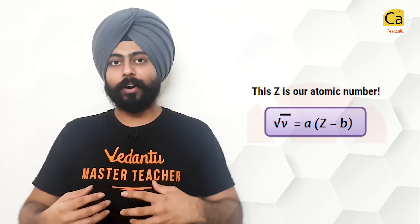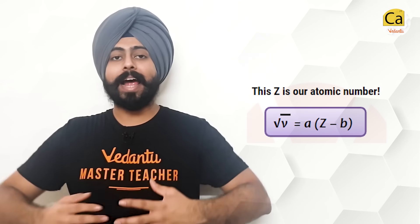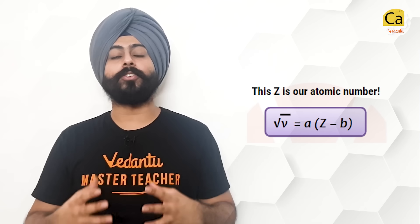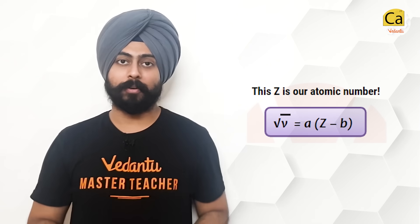In 1913, Henry Moseley paved the way for the modern periodic law. He was doing X-ray spectroscopy with a lot of different elements. In his experiment, he found out that there is a linear relationship between the root of the frequency of the emitted X-rays and this new curious number he called Z — the atomic number. Hence came the modern periodic law: the properties of elements are a function of their atomic numbers.